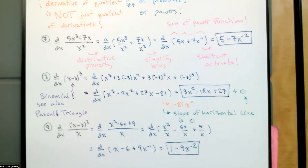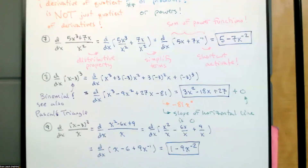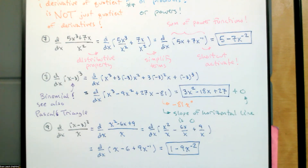Everybody knows sine, cosine, and tangent. Usually we all know secant, cosecant, and cotangent, but really out of those second three, if we just take secant we'll be fine. There's a whole bunch of other trig functions that we don't need anymore, mainly because calculators happened — I'm pretty sure it started with slide rules, but definitely since calculators.